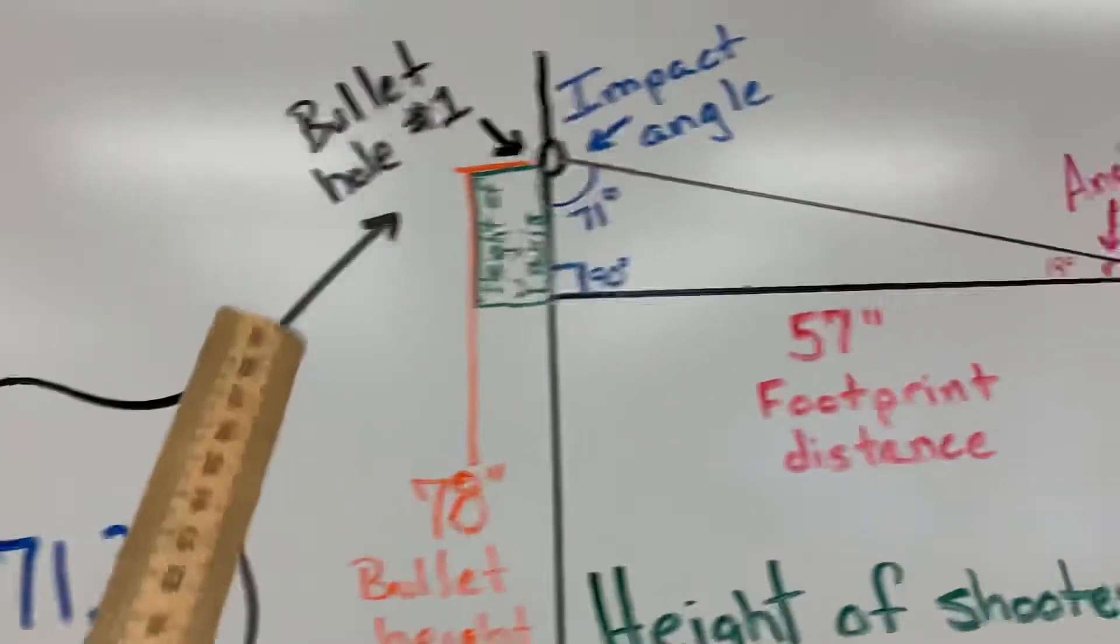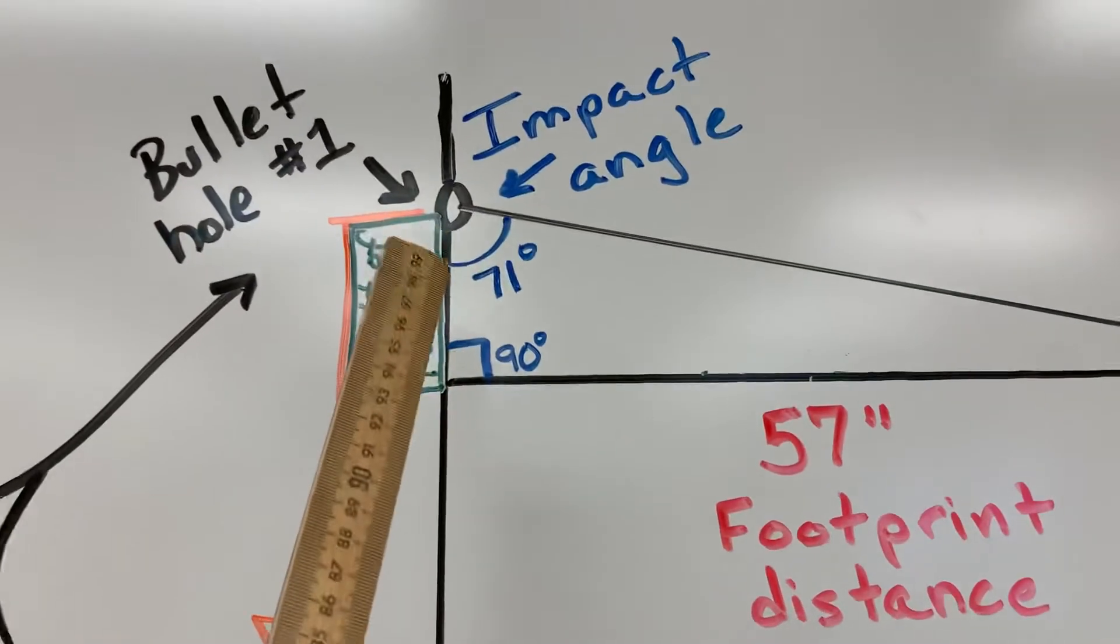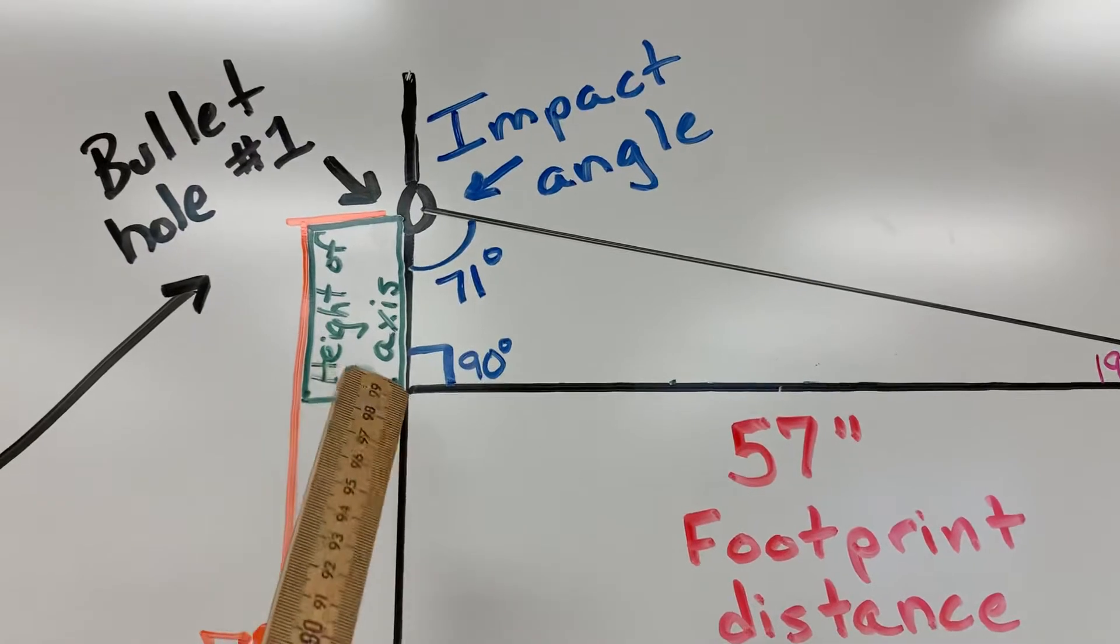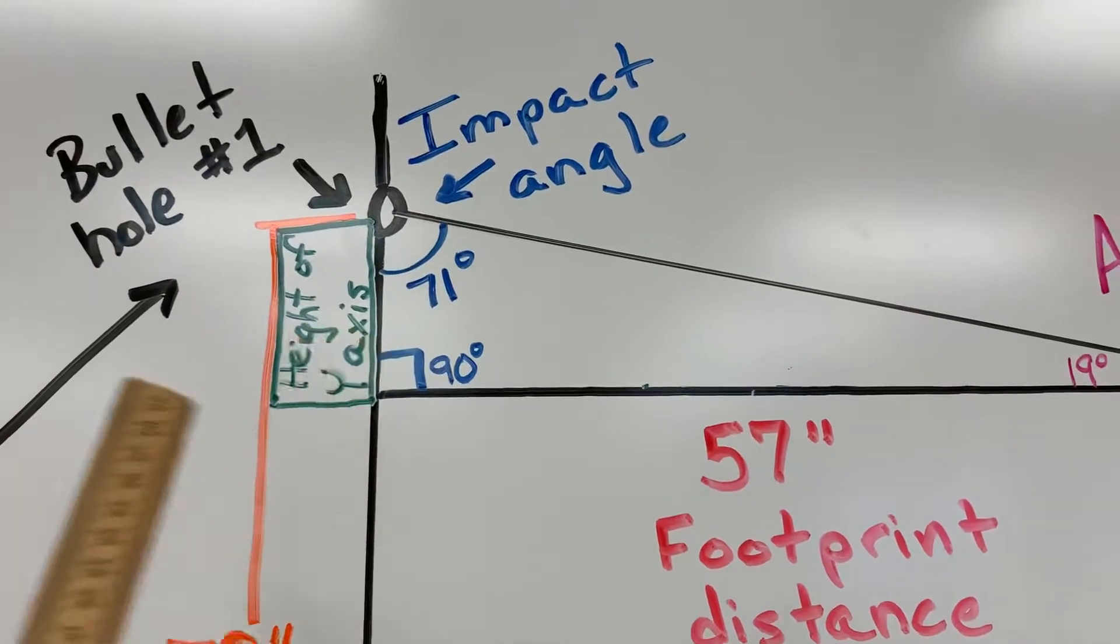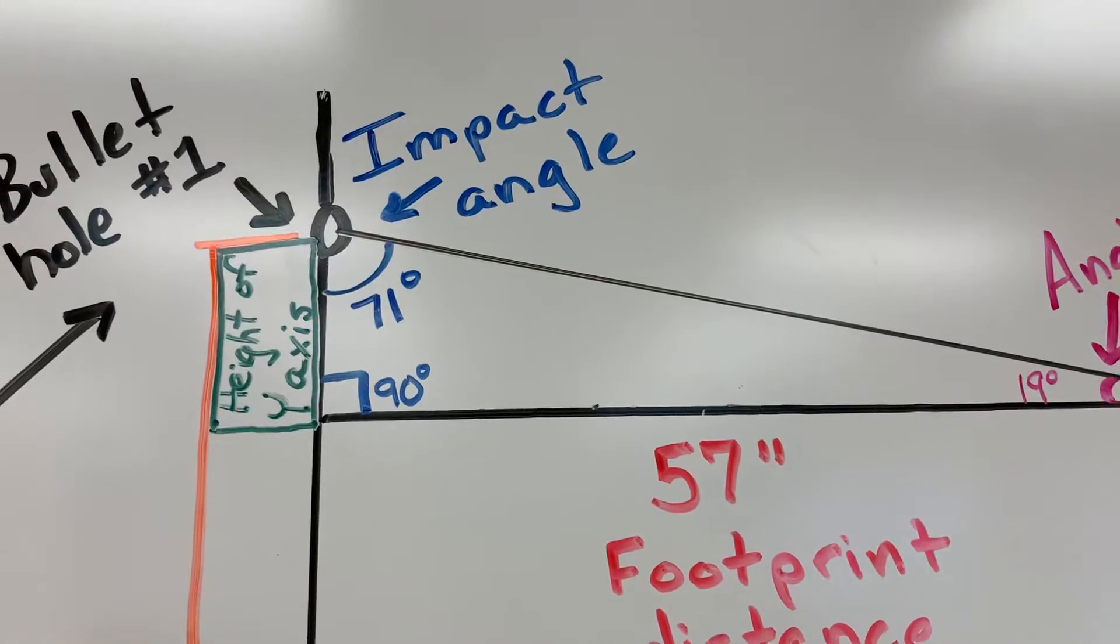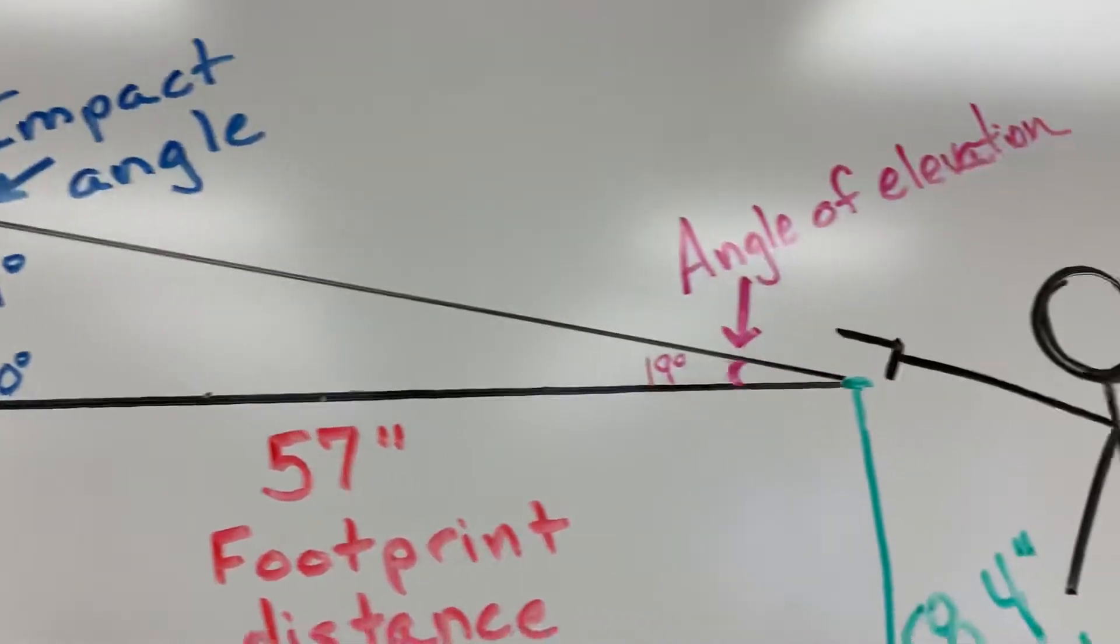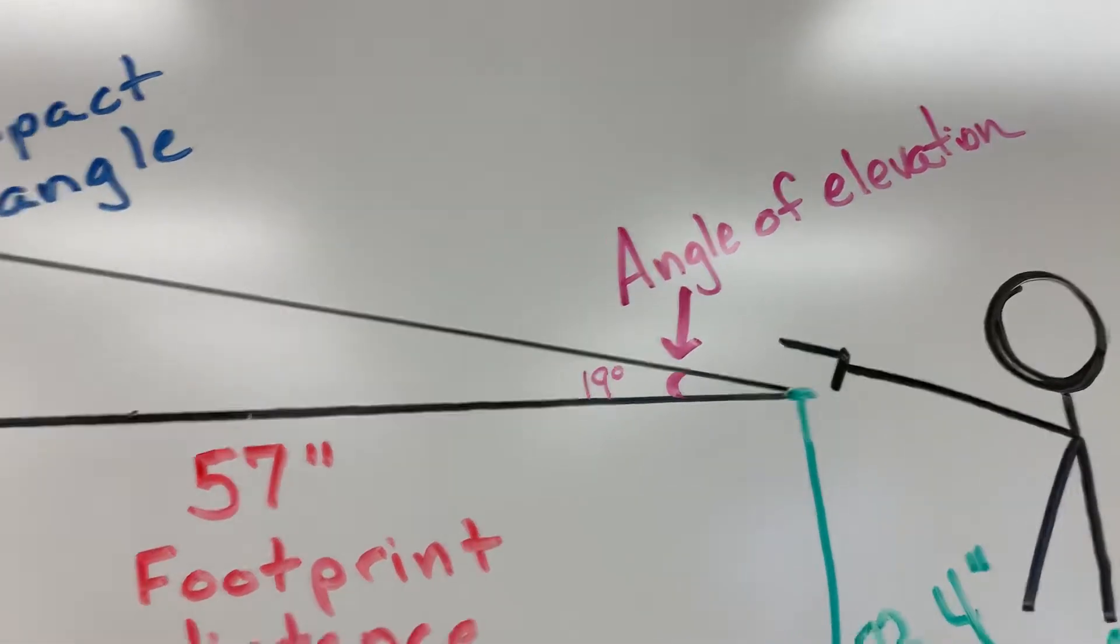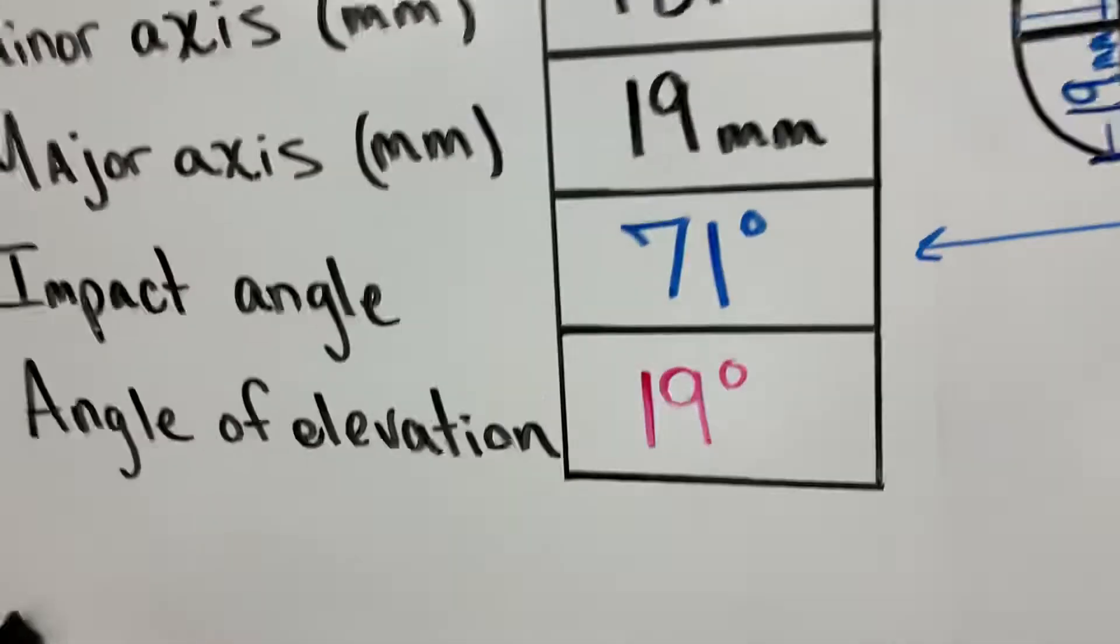Now, if you know the impact angle is 71 and you know that the wall and the floor make a 90 degree angle, you can subtract 71 and 90 from 180. And when you do that, you get 19. So that's how we got the angle of elevation.